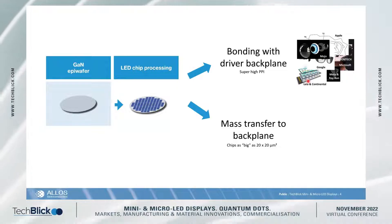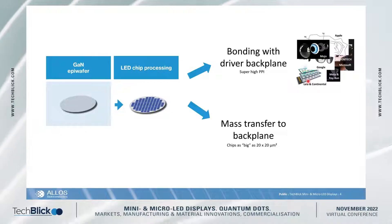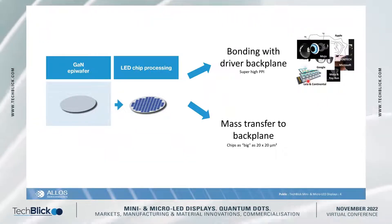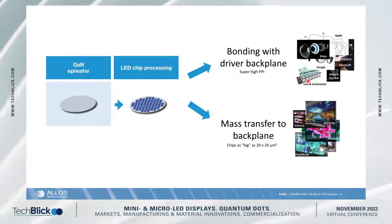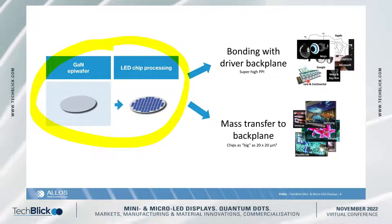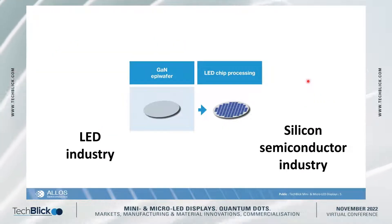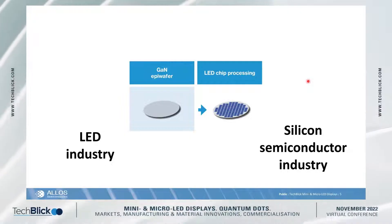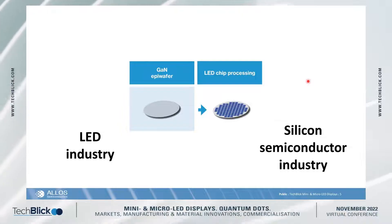And you have what some people call assembled displays, where the chips are much larger and the pixel densities are not as high. This includes transparent displays. We're not going to focus on that part of the manufacturing, but on this very first part — which is quite interesting to observe because you have the LED industry and the silicon semiconductor industry meeting here.